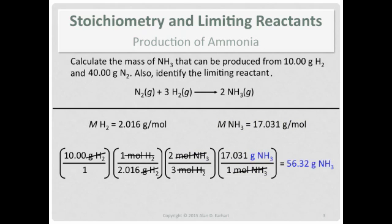So assuming we have 10.00 grams of hydrogen gas and an excess of nitrogen gas, we can make 56.32 grams of ammonia. But we don't have an excess of nitrogen gas.